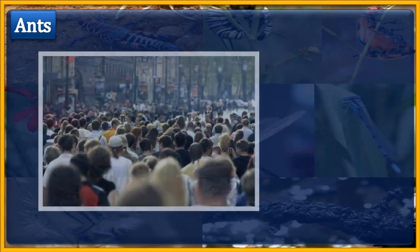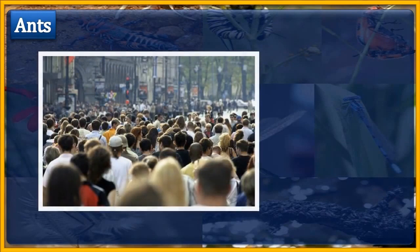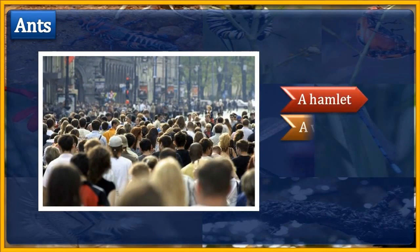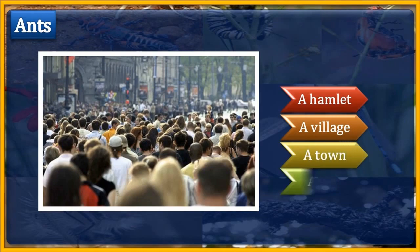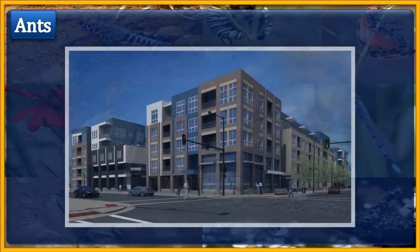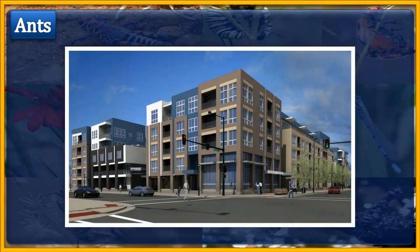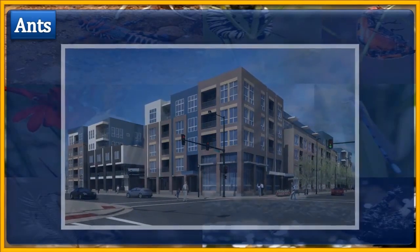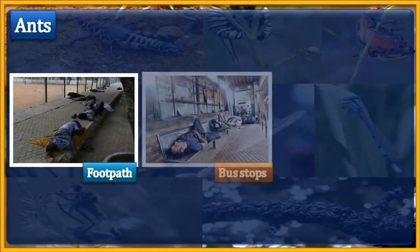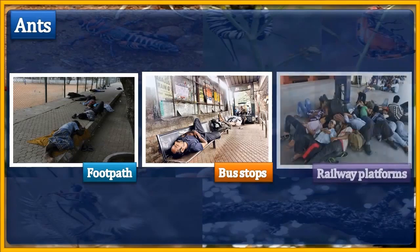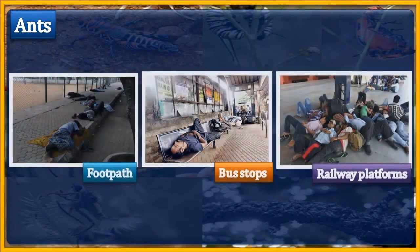On the basis of the number of people living in an area, the settlement is called a hamlet, a village, a town, or a city. In cities, some people who cannot afford to have a house live on footpaths, bus stops, or on railway platforms. They are homeless people.